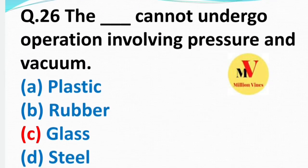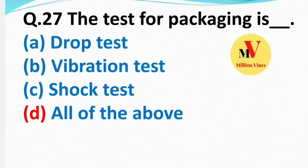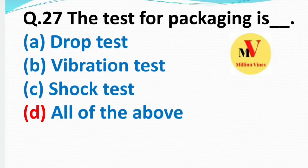Next: Which cannot undergo operations involving pressure and vacuum? Right answer — glass cannot undergo. Next: The tests for packaging are — drop test, vibration test — right answer D — all of the above.